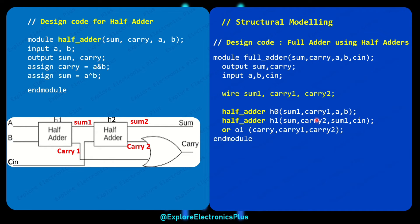The second half adder generates carry2 and the final sum. Since carry1 and carry2 are also not ports, they are declared as wires. The results are sum1, carry1, carry2, and sum. The final sum is the sum output, but carry1 and carry2 are taken into the OR gate. Using the OR gate primitive in Verilog: or o1(carry, carry1, carry2) — o1 is the instance name, carry is the output, and carry1 and carry2 are the inputs. End module completes the structural modeling of the full adder.